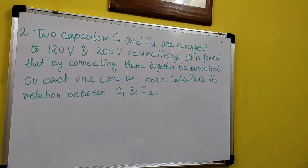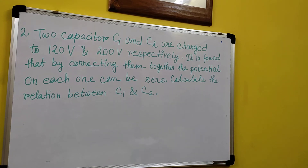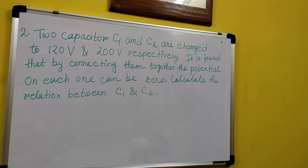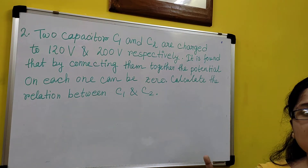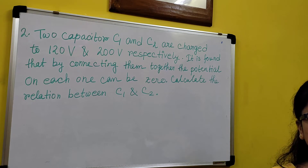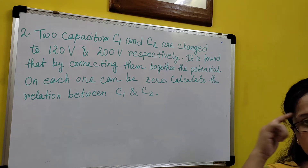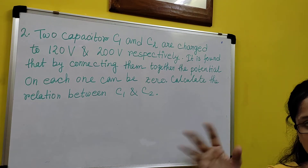First of all, what is happening? If I have two capacitors, when can the potential be made 0? The potential on each one of them can be made 0 if and only if they are connected in opposite polarity. This must be very clear.